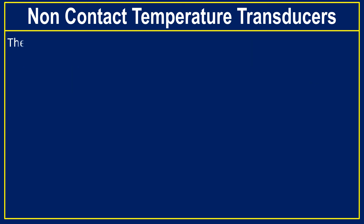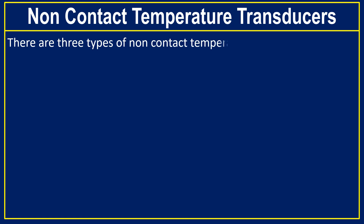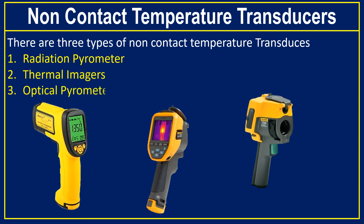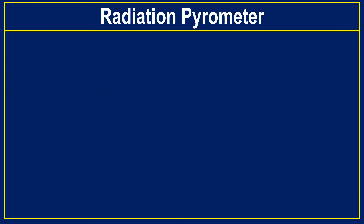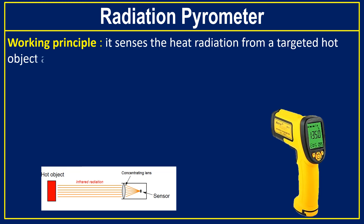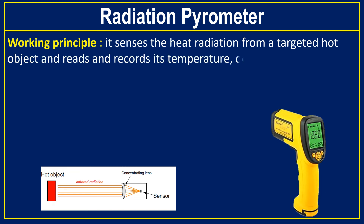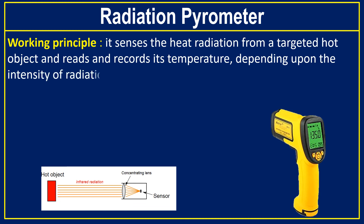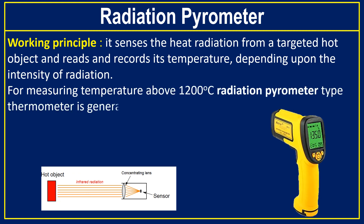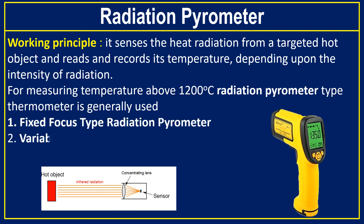There are three types of non-contact temperature transducers: radiation pyrometers, thermal imagers, and optical pyrometers. The working principle of a radiation pyrometer is that it senses heat radiation from a target hot object and records its temperature depending on the intensity of radiation. For measuring temperatures above 1200 degrees centigrade, the radiation pyrometer is generally used. There are two types: fixed focus type and variable focus type radiation pyrometer.